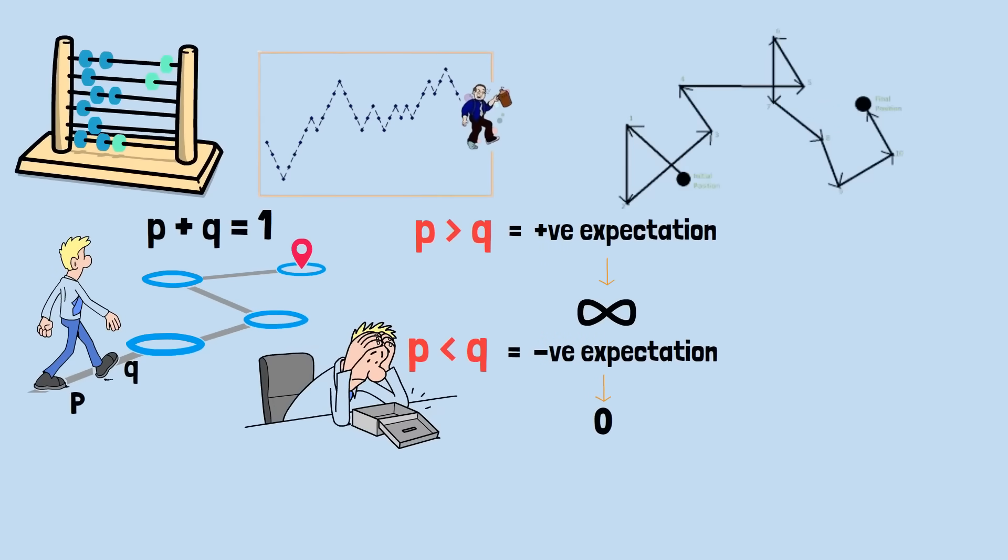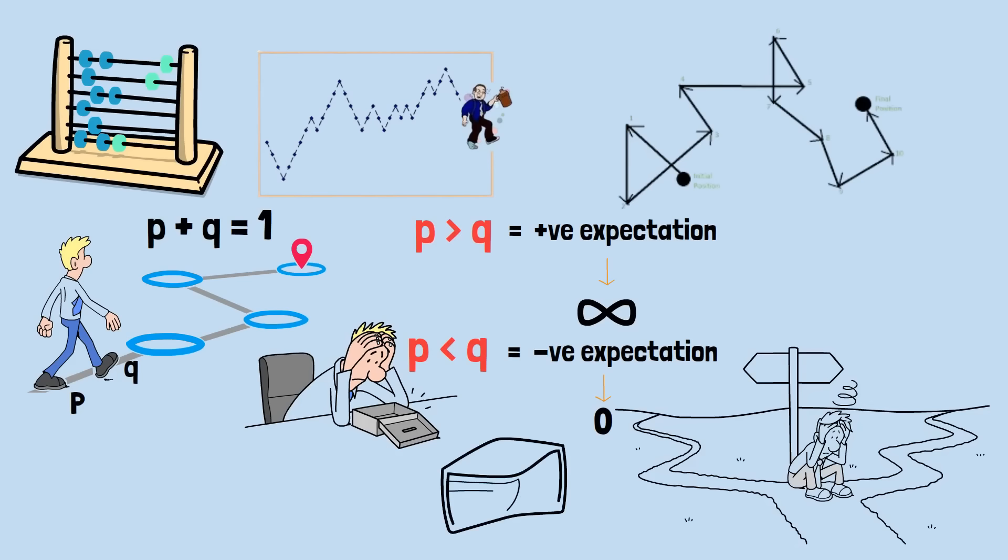Casino games create negative expectation random walks. No matter where you start or how you bet, the mathematics ensures that continued play leads to eventual ruin. The only question is how long it takes.